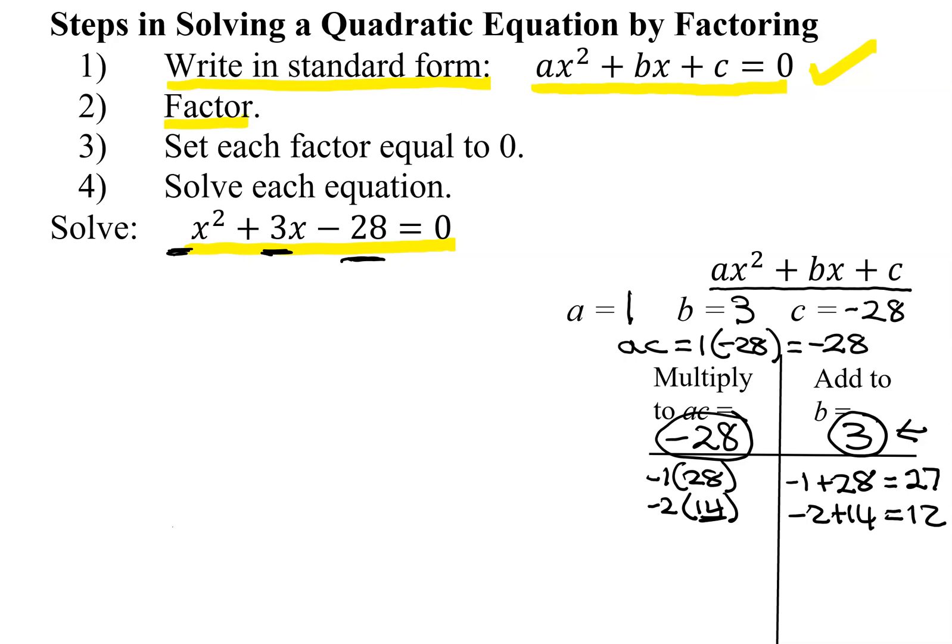Getting closer. Does 3 divide into 28? No. Does 4? Yes. So it's going to be negative 4 times positive 7. They multiply to negative 28. And what is negative 4 plus 7? Positive 3. Eureka! That's the number I need.